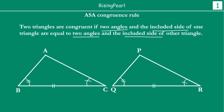Last time we talked about SAS congruence rule and we realize that it is an axiom — it means it is universally true. We have not proved SAS. But this is the first time we are talking about ASA congruence rule and we are going to find out how we can prove it. So we have: angle B equals angle Q, angle C equals angle R, and side BC equals QR. The ASA congruence rule tells us that if this is the case, then triangle ABC is congruent to triangle PQR.